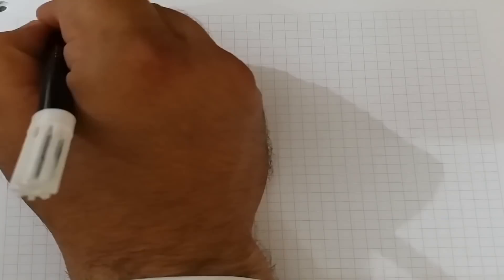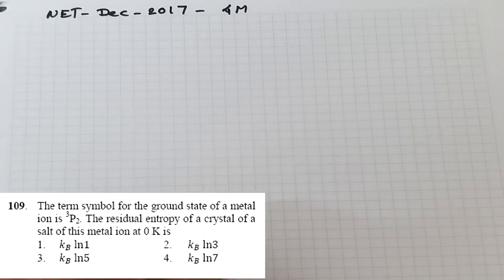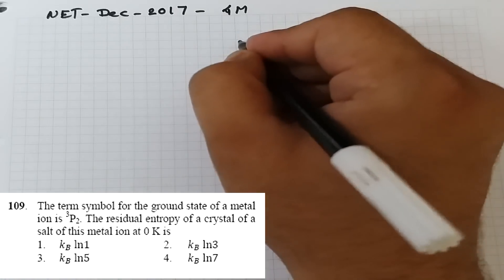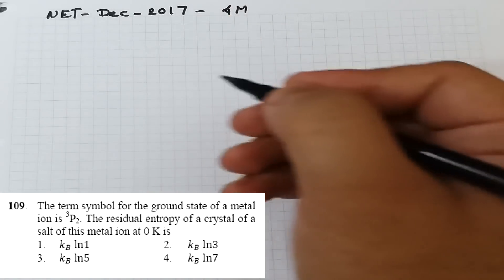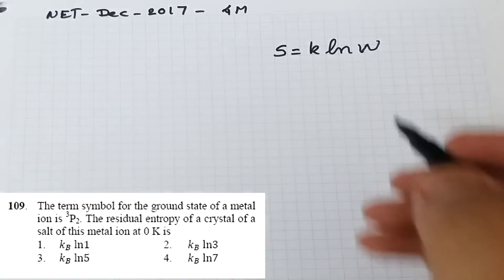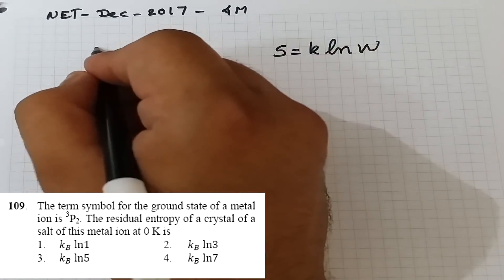Moving on to the next question from CSIR NET December 2017, asked for four marks. The question says: the term symbol for the ground state of a metal ion is ³P₂, and we must find the residual entropy of the crystal of a salt of this metal ion at zero Kelvin. Residual entropy is calculated using the Maxwell-Boltzmann entropy equation: S = k_B ln W.